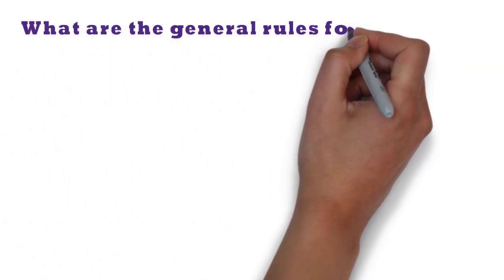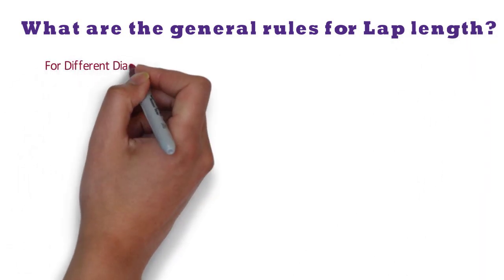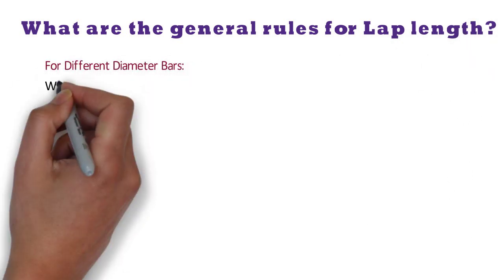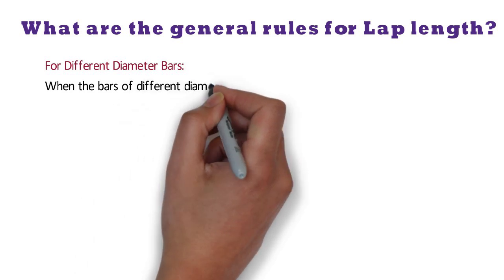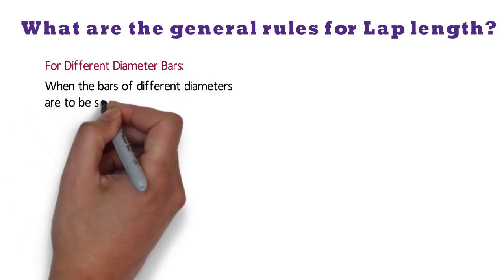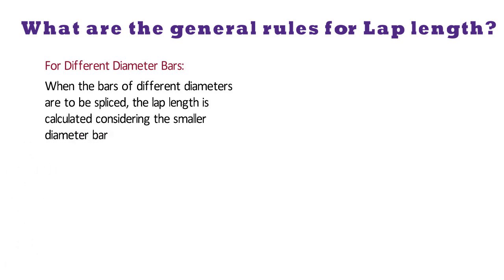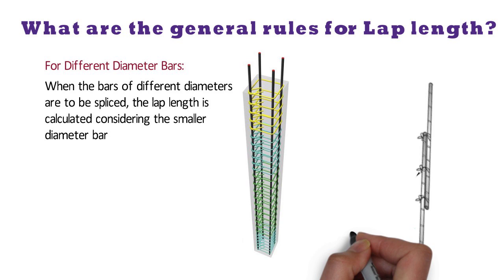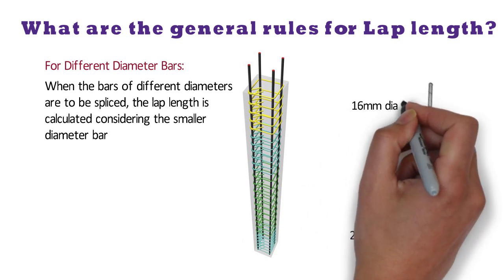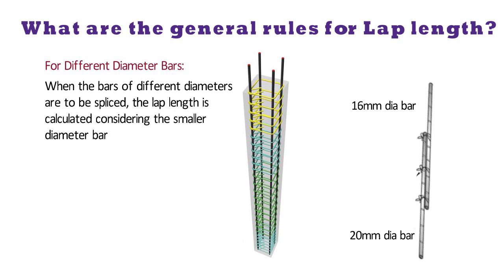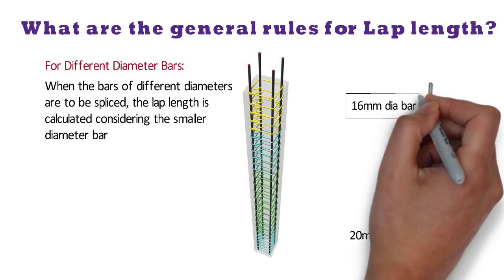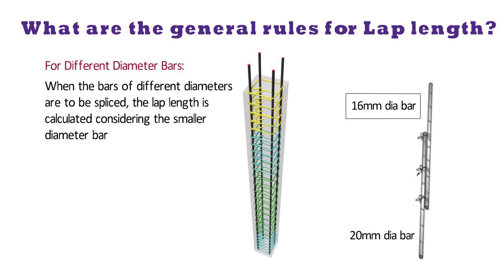What are the general rules for lap length? For different diameter bars: when bars of different diameters are to be spliced, the lap length is calculated considering the smaller diameter bar. Suppose you are constructing a column — from the bottom a 20 mm diameter bar is coming and a 16 mm diameter bar has to be spliced. Then for calculating lap length, 16 mm diameter should be considered and not 20 mm.